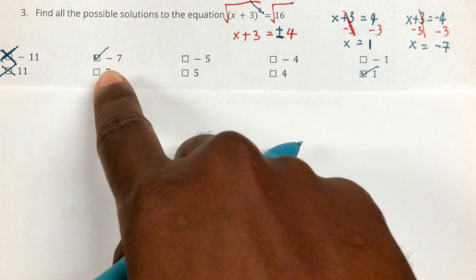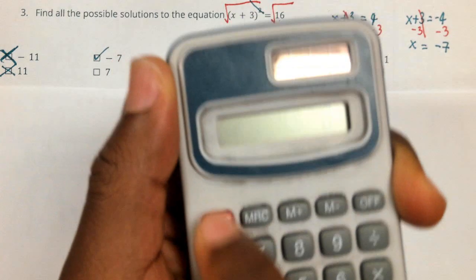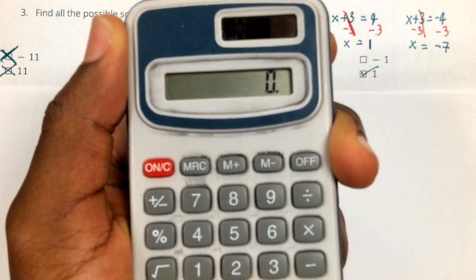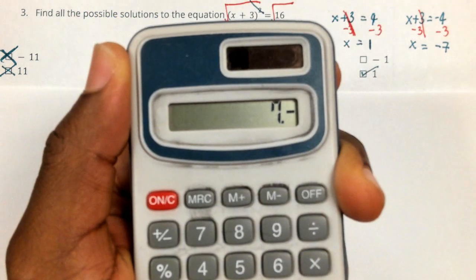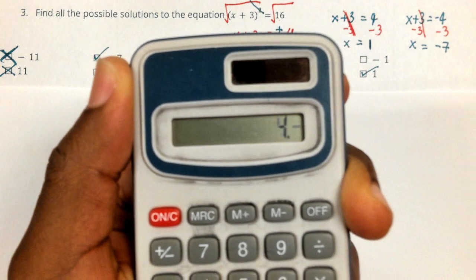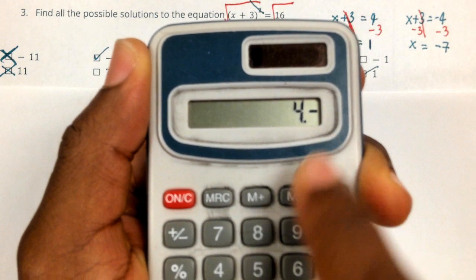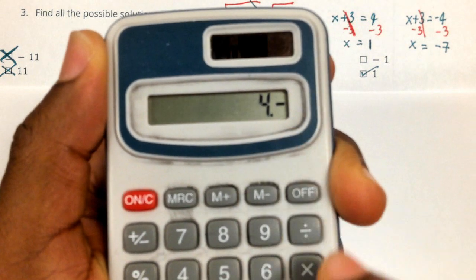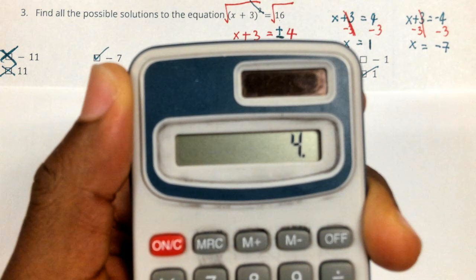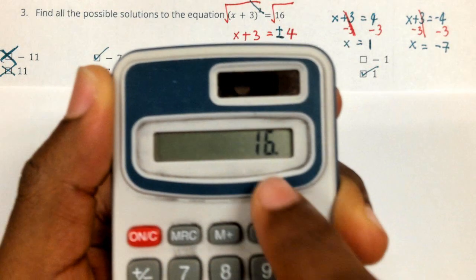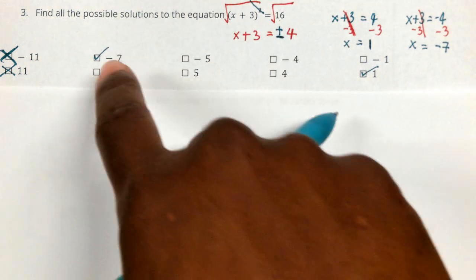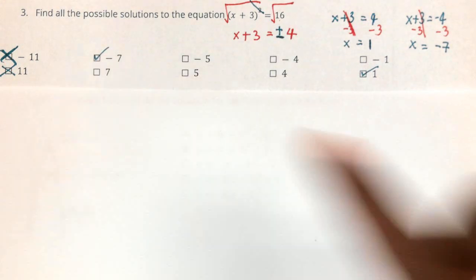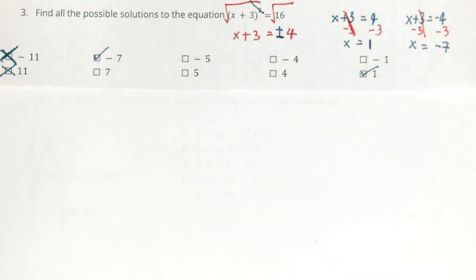And I'll show you that negative seven does work. So if I did negative seven plus three, and then when I square that, so I got negative four. If I did negative four times negative four, I would get 16. So again, that's one that would work.